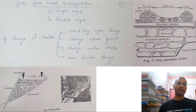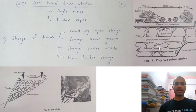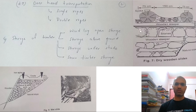Wet slides are used in hilly regions where a stream is present but no proper river. Timber is transported from uphill to downhill using the stream flow. Dry slides are used when even stream water is not available. Just remember this concept and the diagram — drawing the diagram in the exam will be sufficient.